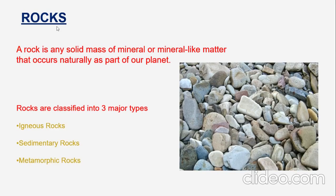So, what is a rock? A rock is an aggregate of minerals. A mineral is a naturally occurring crystalline substance with a fixed chemical composition. These minerals together form a rock. Rocks are classified into three types: igneous rock, sedimentary rock, and metamorphic rock.